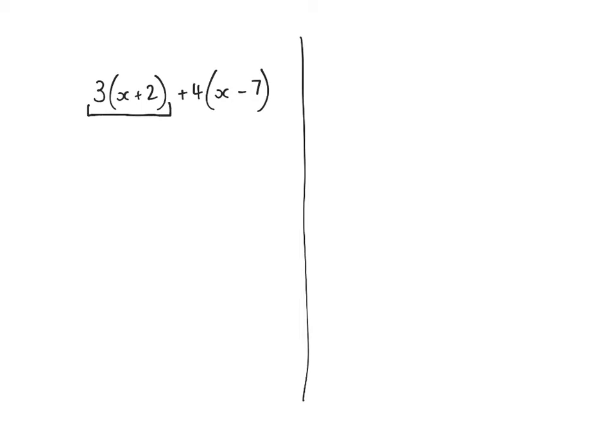we need to expand each bracket separately. So the first bracket I'm going to expand is this one. We've got 3 multiplied by x is 3x. 3 multiplied by 2 is 6.